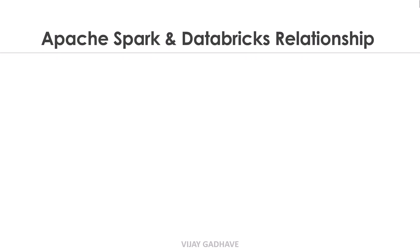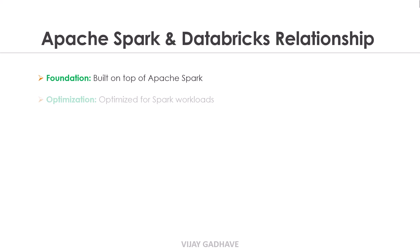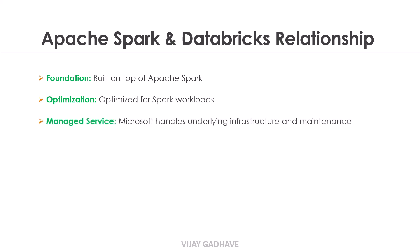Now we will understand the relationship between Apache Spark and Databricks. The first point is Foundation — Azure Databricks is built on top of Apache Spark, meaning all capabilities and features of Spark are available within Databricks. Second is Optimization — Databricks is optimized for Spark workloads, designed to provide the best possible performance and scalability. Third is Managed Service — Databricks is a managed service, which means Microsoft handles the underlying infrastructure and maintenance, allowing users to focus on their data projects without worrying about managing hardware and software.